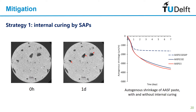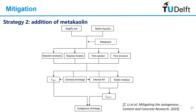To further mitigate the shrinkage especially in the very early age we need something that can alter the reaction kinetics and the microstructure of the material. That brings us to our second strategy: the addition of metakaolin. Metakaolin is also widely used as a precursor for alkali-activated materials, and we found that if we add just a small amount of metakaolin into slag or slag-fly ash blending systems it shows a great mitigating effect on shrinkage, because it influences many fundamental aspects like the reaction products, reaction kinetics, pore solution, and pore structure.